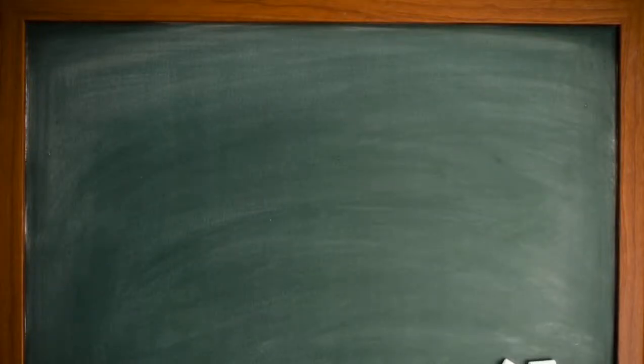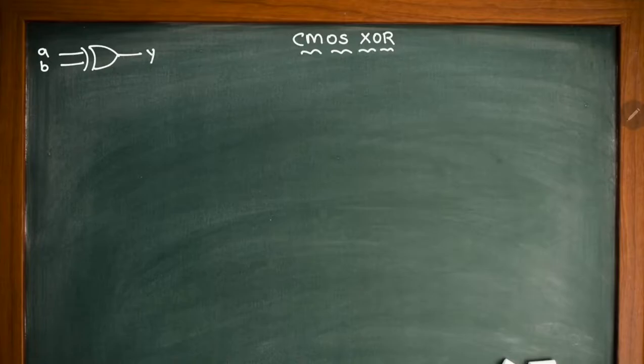Let us try to understand how to draw the schematic of CMOS XOR. Let us draw the symbol of XOR gate. This is the symbol of XOR gate which contains two inputs A and B and output is Y.